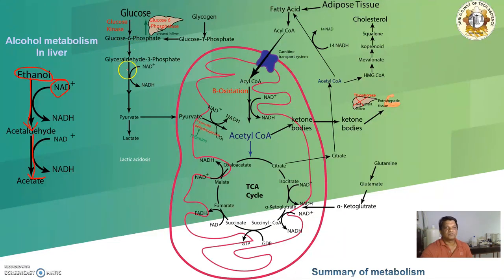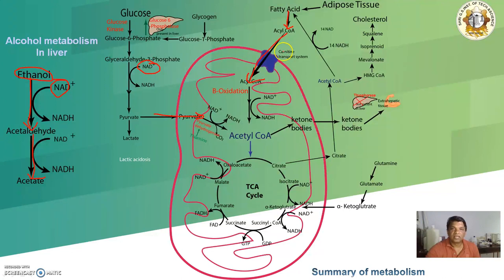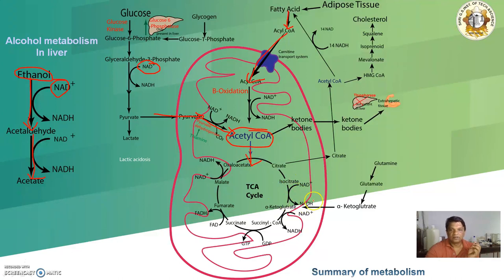In glycolysis, glucose gets converted into glucose-6-phosphate and then into glyceraldehyde-3-phosphate. This process consumes NAD, forming NADH and pyruvate. The pyruvate then moves inside the mitochondria. Separately, fatty acids deposited in adipose tissue — released in cases of diabetes or starvation — are converted to acyl-CoA, which enters the mitochondria via the carnitine transport system, undergoes beta oxidation, and forms acetyl-CoA. Acetyl-CoA then enters the TCA cycle, generating a large amount of NADH and energy.